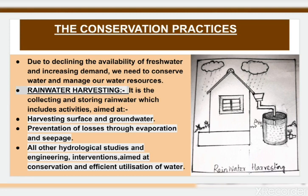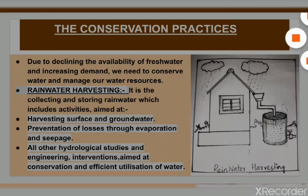How will we conserve water resources? There are several methods. The most popular one is rainwater harvesting. Due to declining availability of fresh water and increasing demand, we need to conserve and manage our water resources. Rainwater harvesting is the collecting and storing of rainwater, which includes activities such as harvesting surface and ground water, prevention of losses through evaporation and seepage, and all other hydrological studies and engineering interventions aimed at conservation and efficient utilization of water.